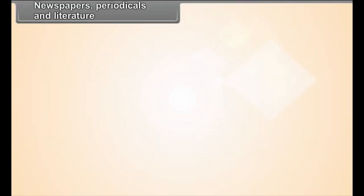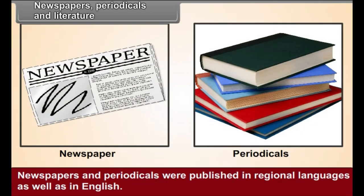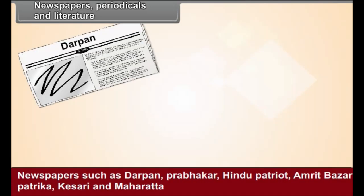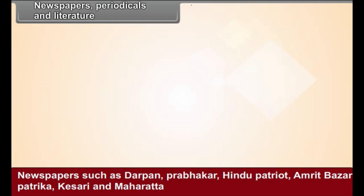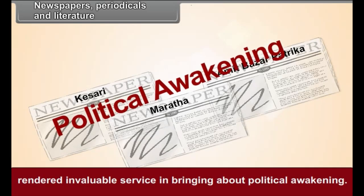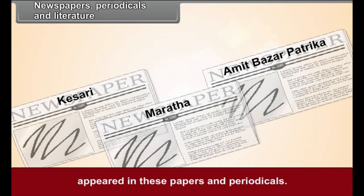Newspapers, Periodicals, and Literature: In the 19th century, printing as a profession grew rapidly in India. Newspapers and periodicals were published in regional languages as well as in English, carrying articles about the social, economic, and political conditions in the country. Newspapers such as Darpan, Prabhakar, Hindu Patriot, Amrit Bazaar Patrika, Kesari, and Maharatta rendered invaluable service in bringing about political awakening. Criticism of government policies and suggestions regarding measures for the progress of India appeared in these papers and periodicals.